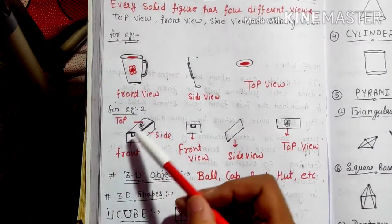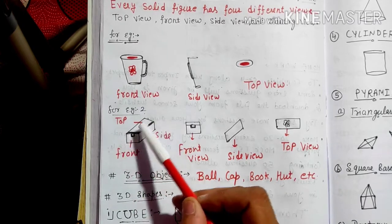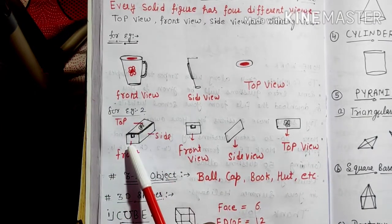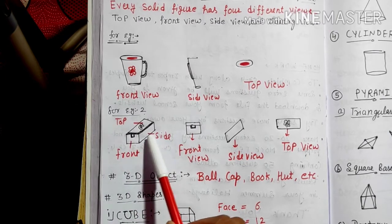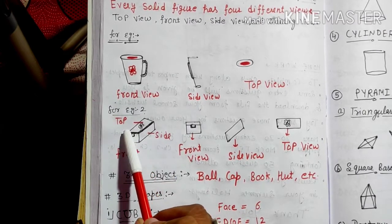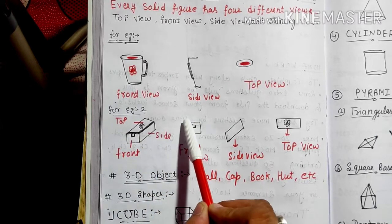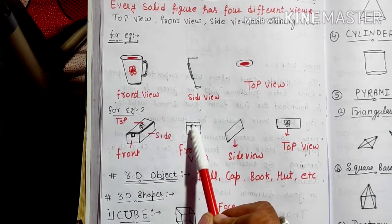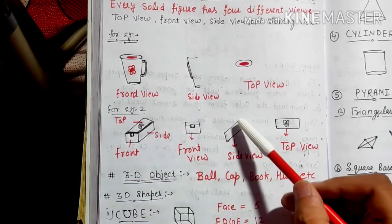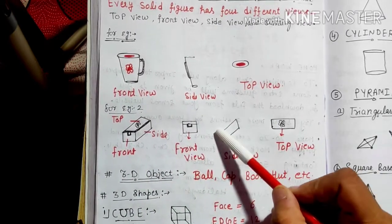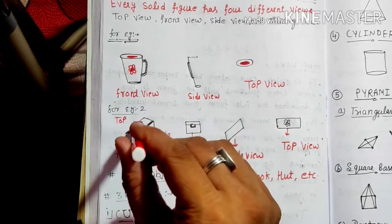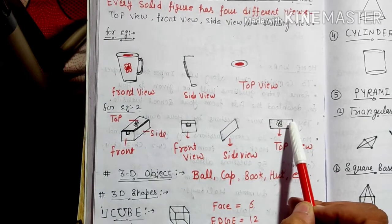Let us take one more example. This is a cuboidal box. This is the top front, this is the front view, and this is the side view. If I look at this box from the front, it will look like this. If I look at the box from the side, it will look like this. And if I look at the box from the top, it will look like this.